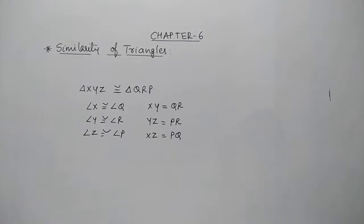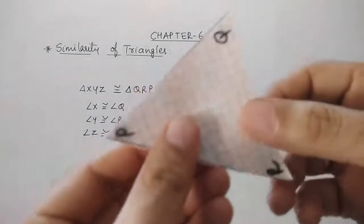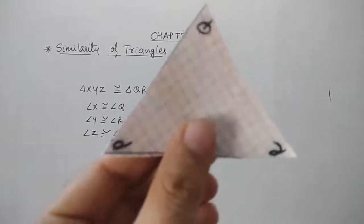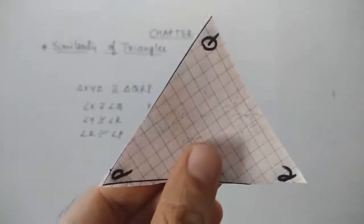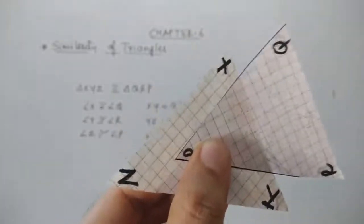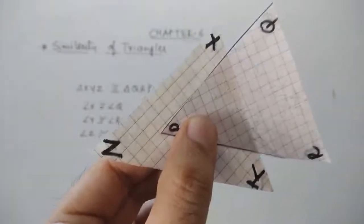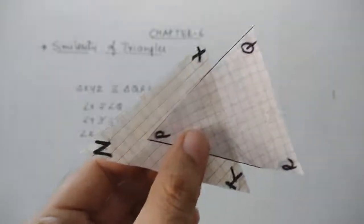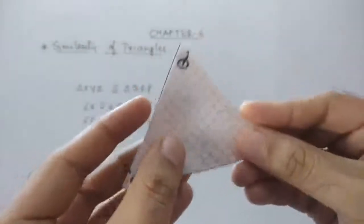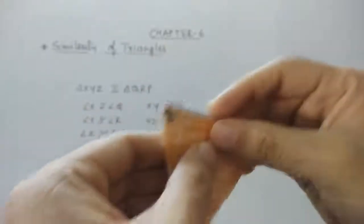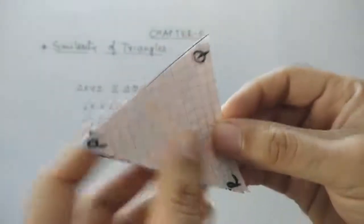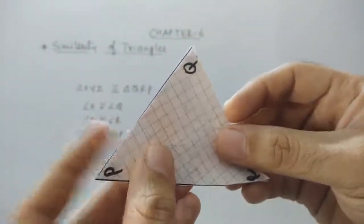Let us understand this with an example. Here is one triangle in my hand — that is triangle PQR — and just behind it is another triangle, triangle XYZ. While showing the correspondence congruence, when I put triangle PQR over XYZ, you can see that both triangles are overlapping each other. So we can say that these two triangles are congruent.